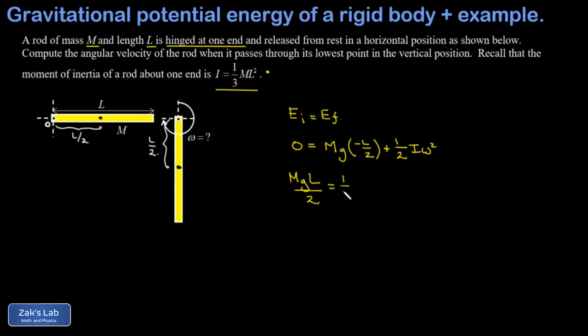And omega is what we're after here. We can cancel a factor of M out of this and we can cancel a factor of L out of this. And 2 times 3 that's 6.